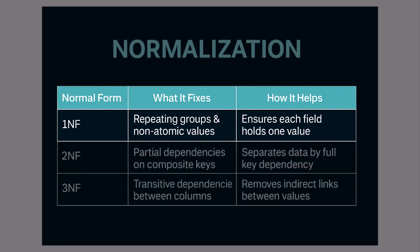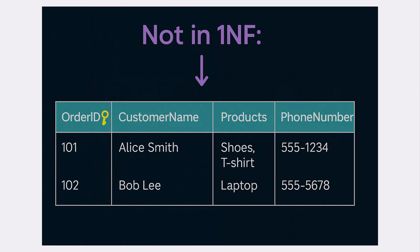Let's talk about first normal form, the first rule of clean databases. The goal? Make sure each column contains only one indivisible value. In this table, fields like products contain multiple values. This breaks atomicity and makes searching or updating much harder.